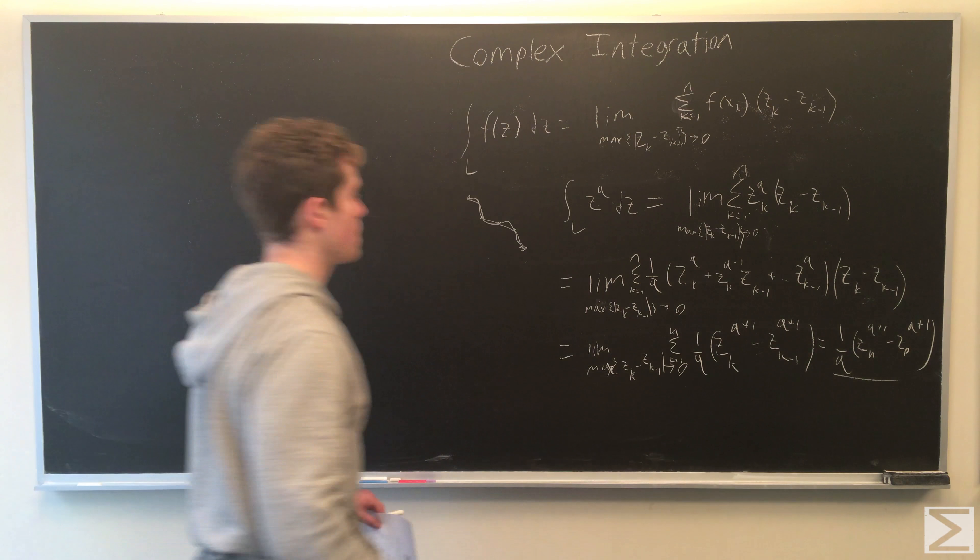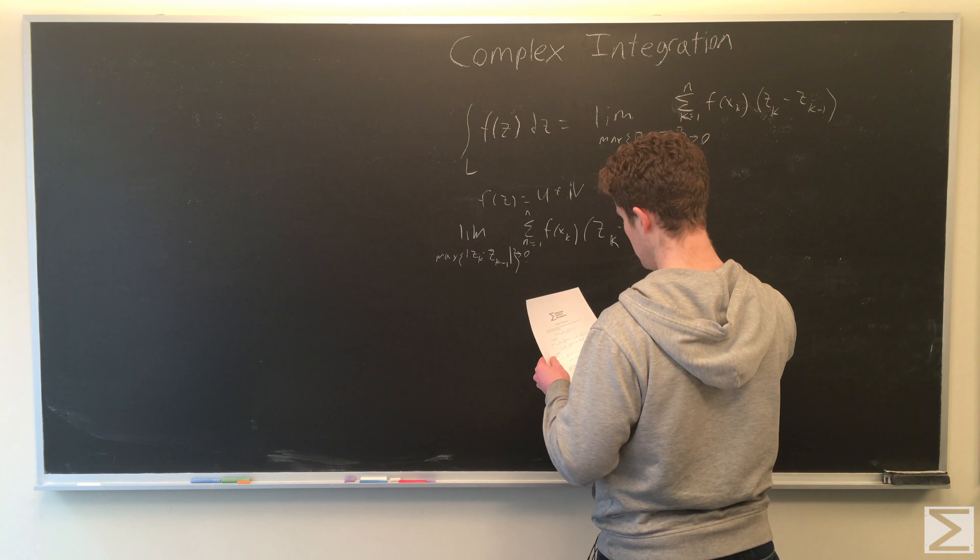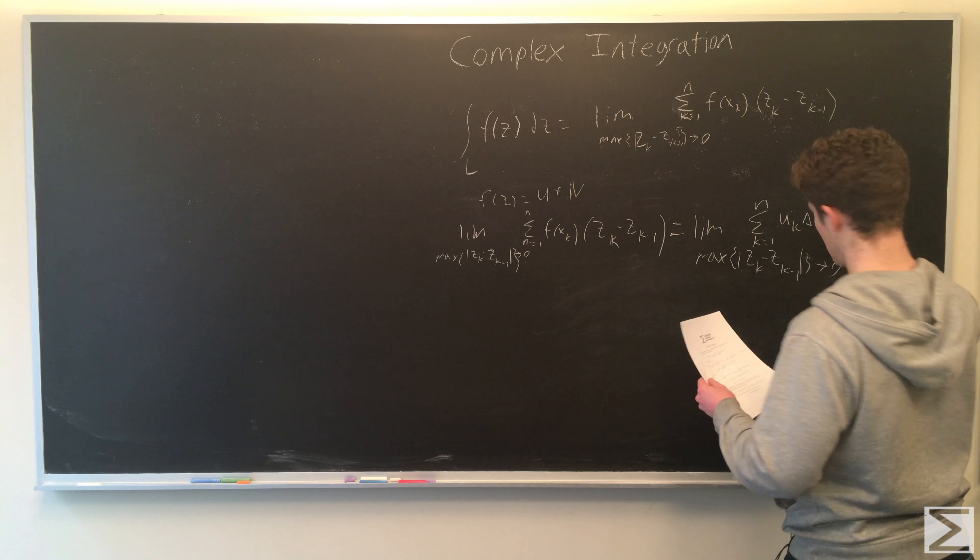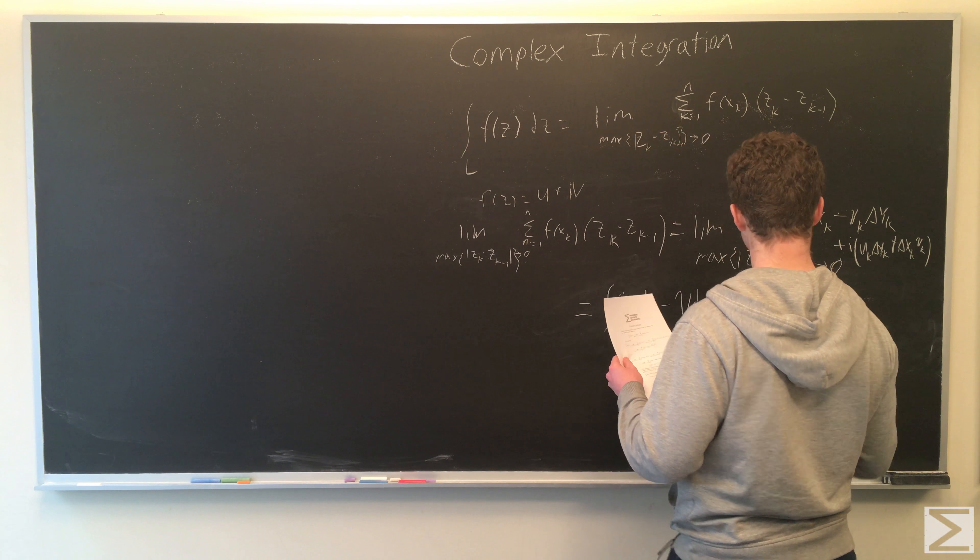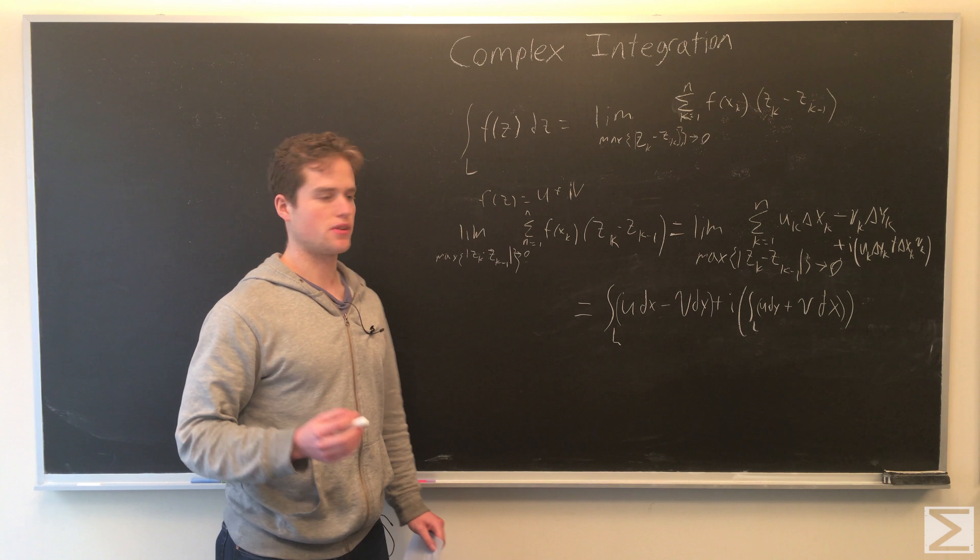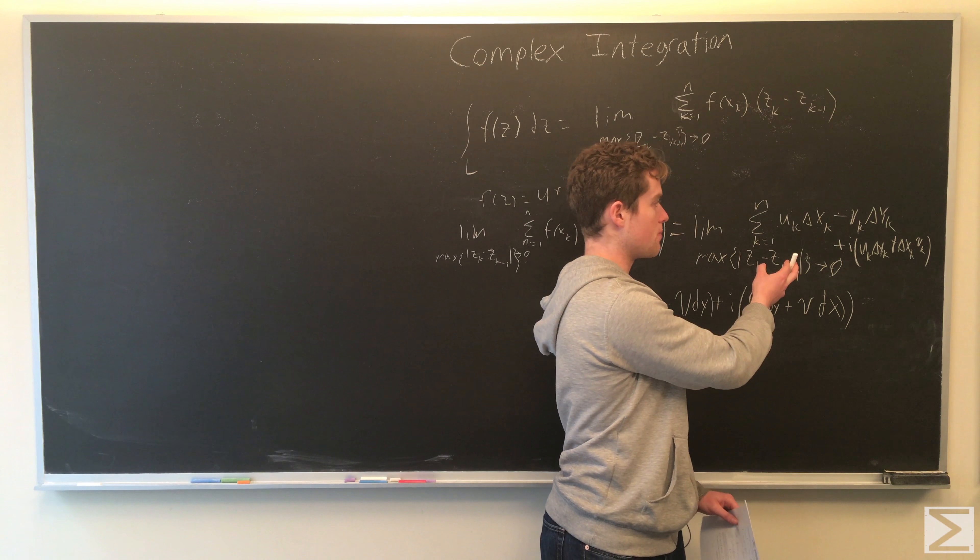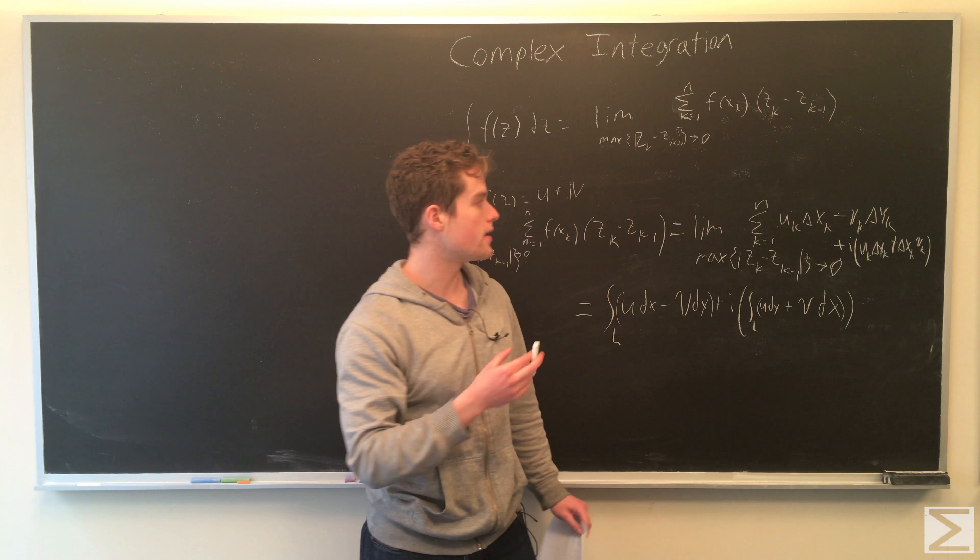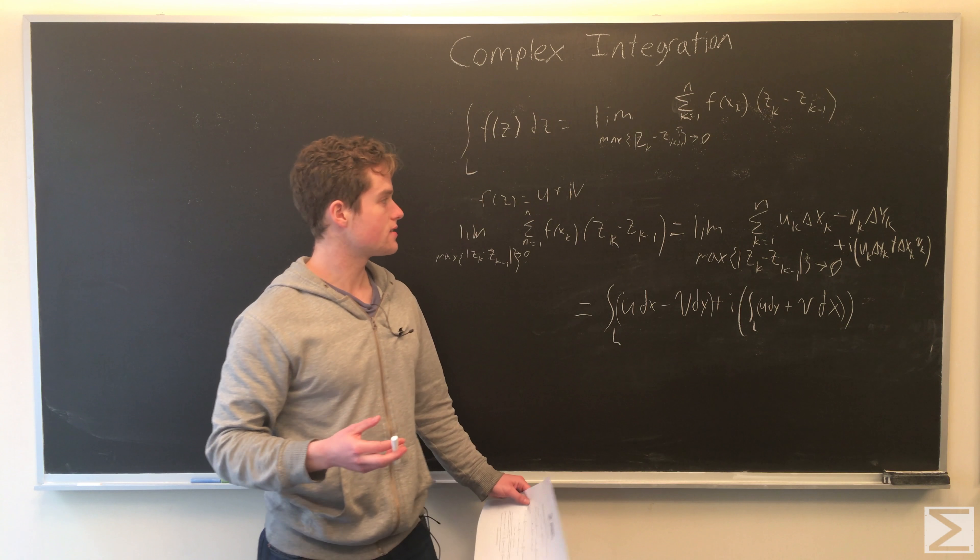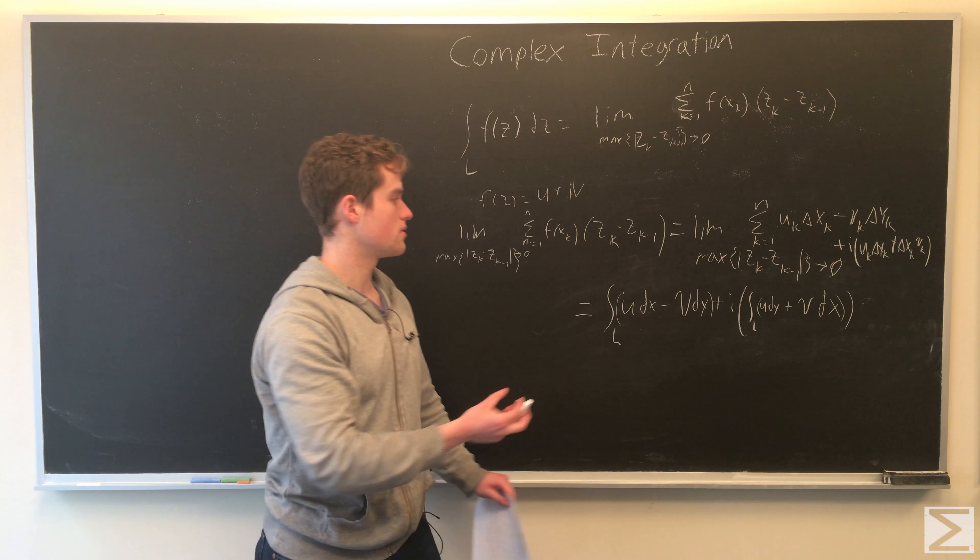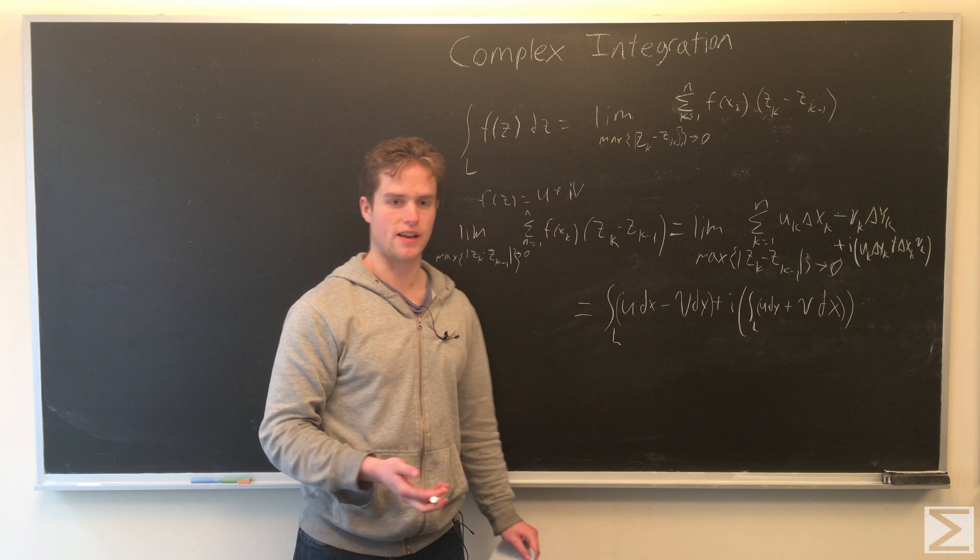One other thing we can do: writing an arbitrary complex function as f(z) equals u plus iv, we can write this in the form u_k plus Δx_k minus v_k Δy_k plus i(u_k Δy_k plus Δx_k times v_k). As our limit makes all these sums go to zero, this is just a couple integrals: integral u dx minus v dy plus integral u dy plus v dx. So it looks like a line integral.